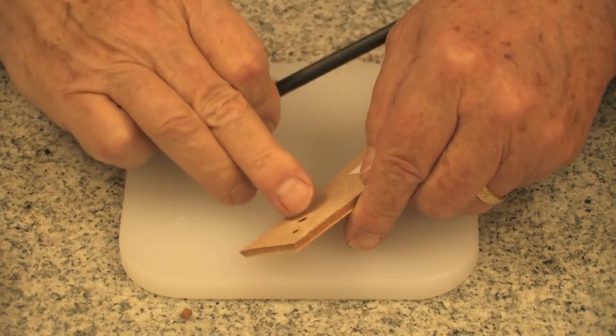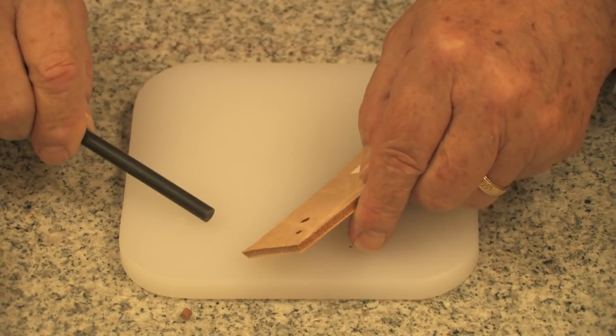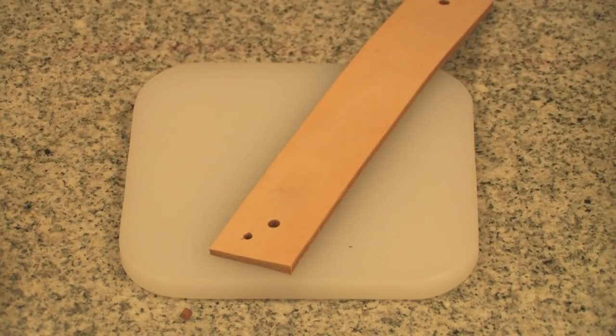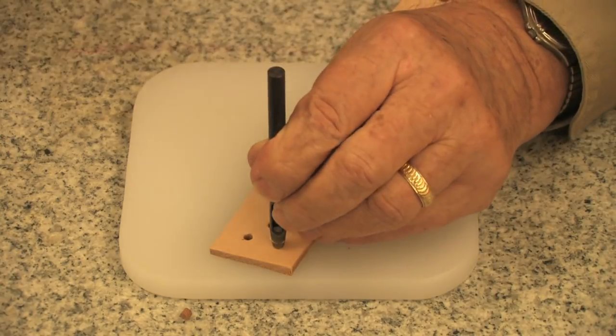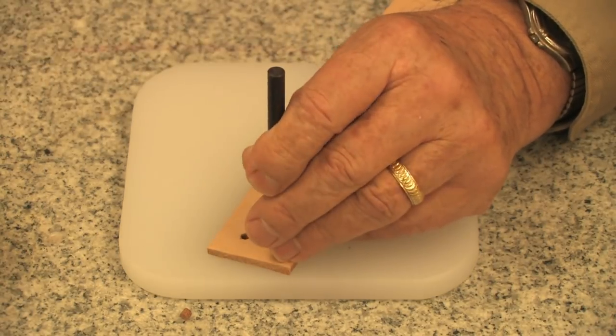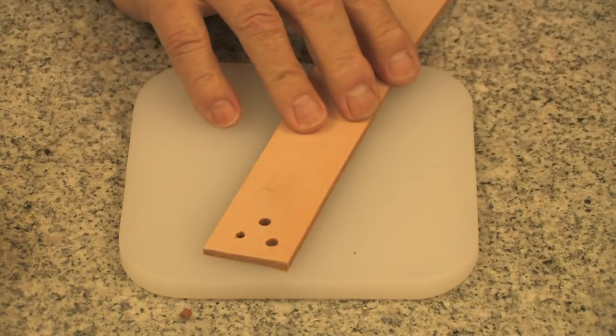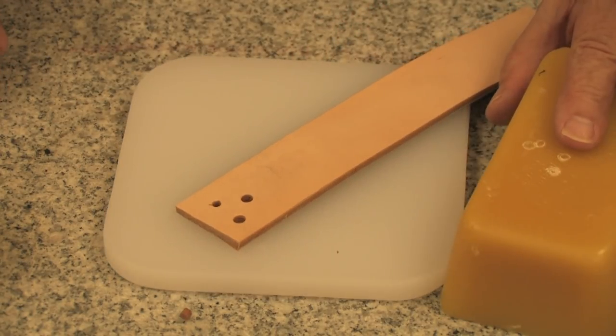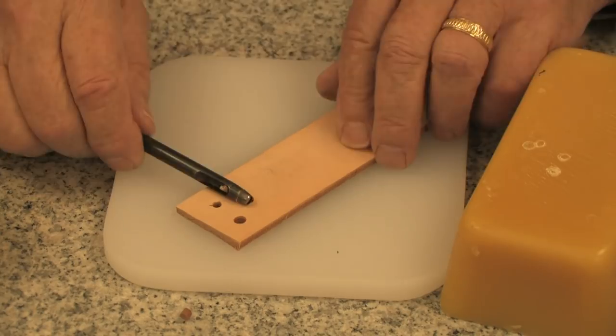It's not necessary to go far into the board, just as far as you need to go to get a nice clean punch. Very important to have beeswax and to polish your punches. This is true even with your revolving punch.